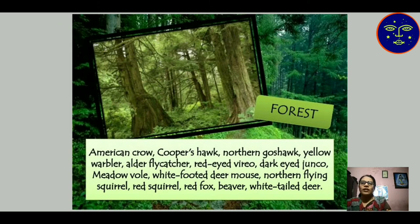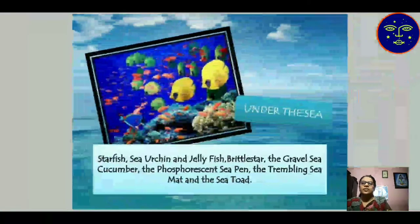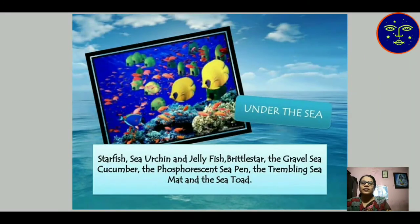Similarly, in an undersea habitat, starfish, jellyfish, sea cucumber, and sea urchin — all organisms are living in the deep sea. So, for these organisms, the deep sea is their habitat.